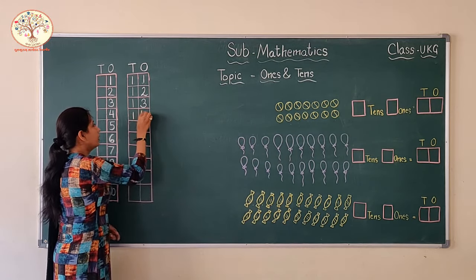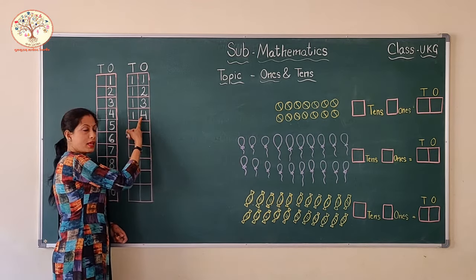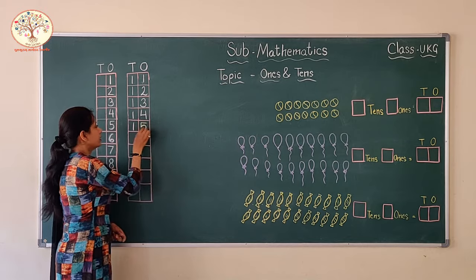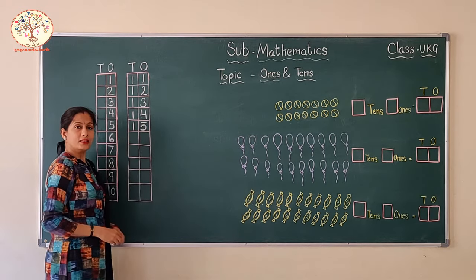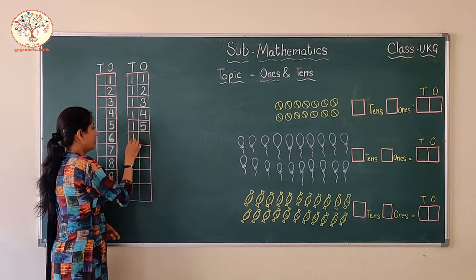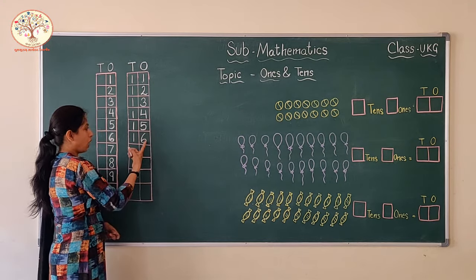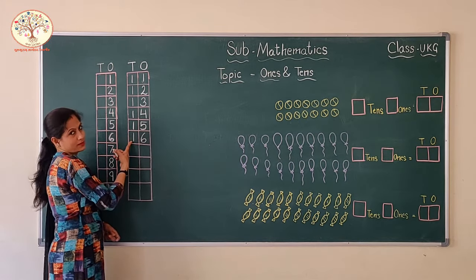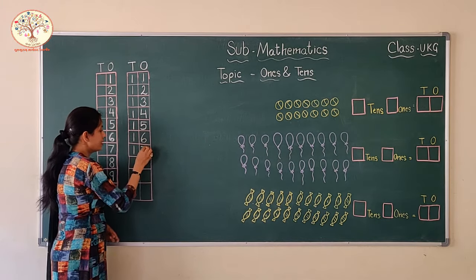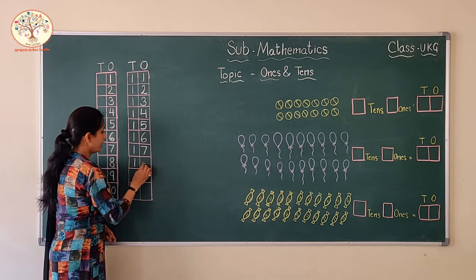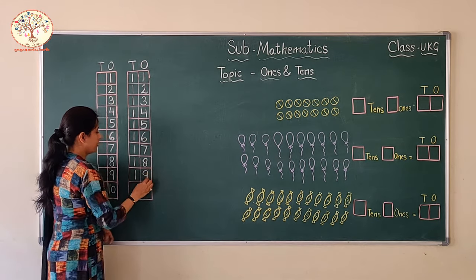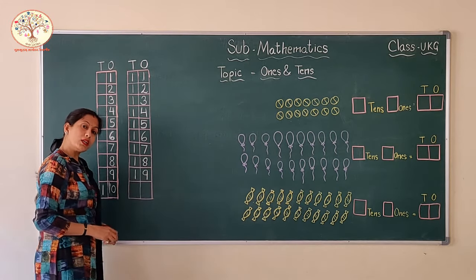Same for 14: 4 ones and 1 ten. What comes after 14? Yes, 15. How many ones? 5 ones and 1 ten. Then 16: 1 ten and 6 ones. Then 17: 1 ten and 7 ones. Then 18: 1 ten and 8 ones. Then 19: 1 ten and 9 ones. What comes after 19?